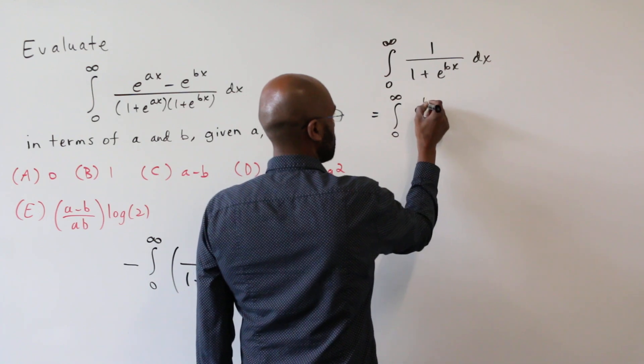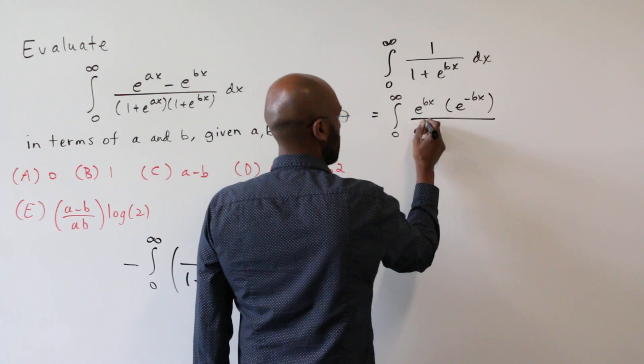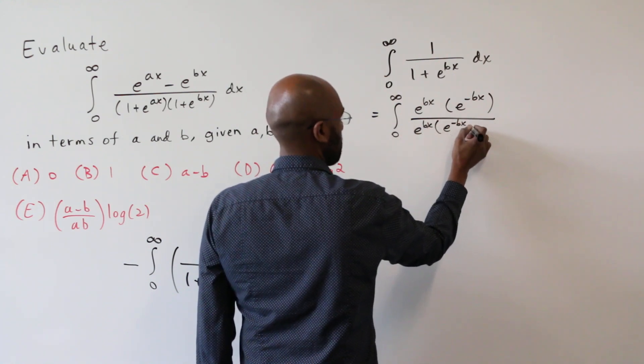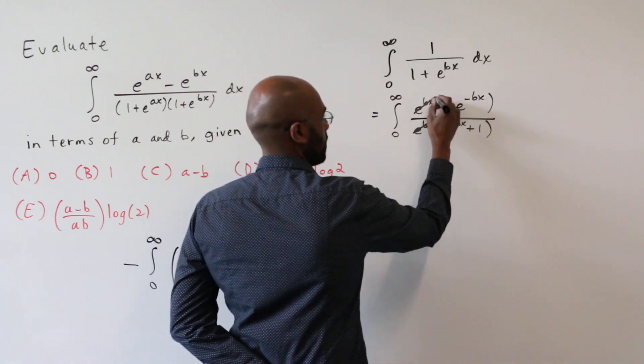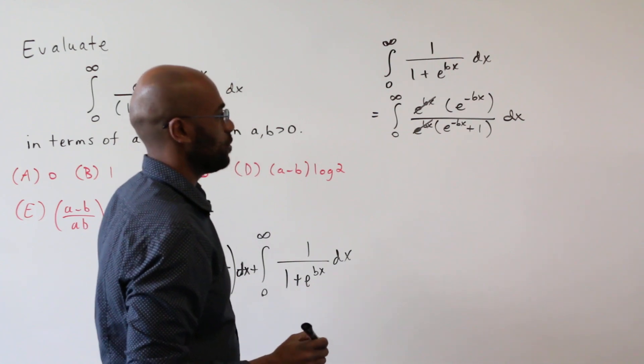So the reason to do that is it forces an exponential in the numerator while still leaving an exponential in the denominator. If we do that and divide these e to the bx's, now we have an integral that's more manageable to deal with.